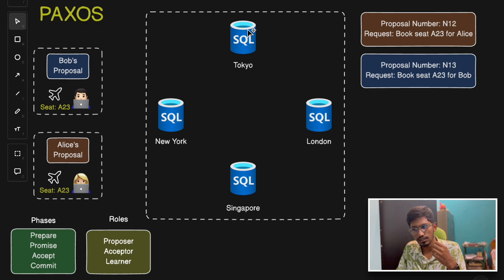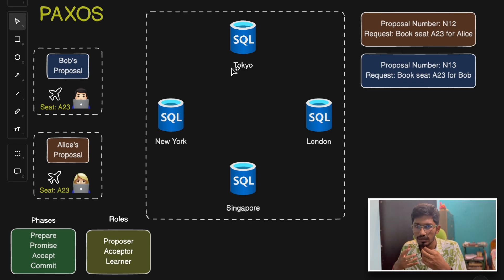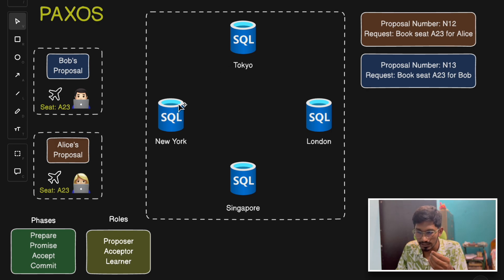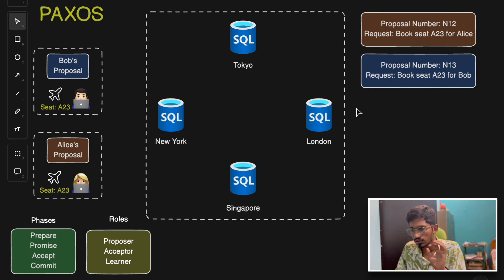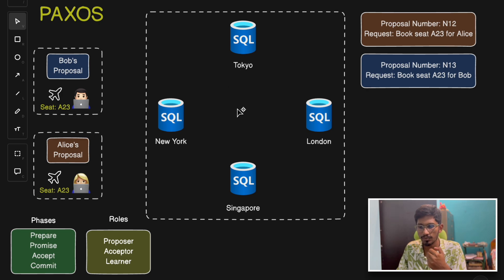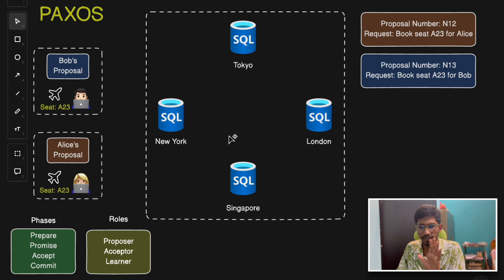Once the proposer's proposal is promised by the acceptor nodes, they send back the promise response to the proposer. Then in the accept phase, the proposer sends an accept request to all acceptor nodes saying 'you promised, now please accept my changes.' Once a majority — say two out of three nodes — accept the request, the decision is finalized and the write operation is done to the databases.